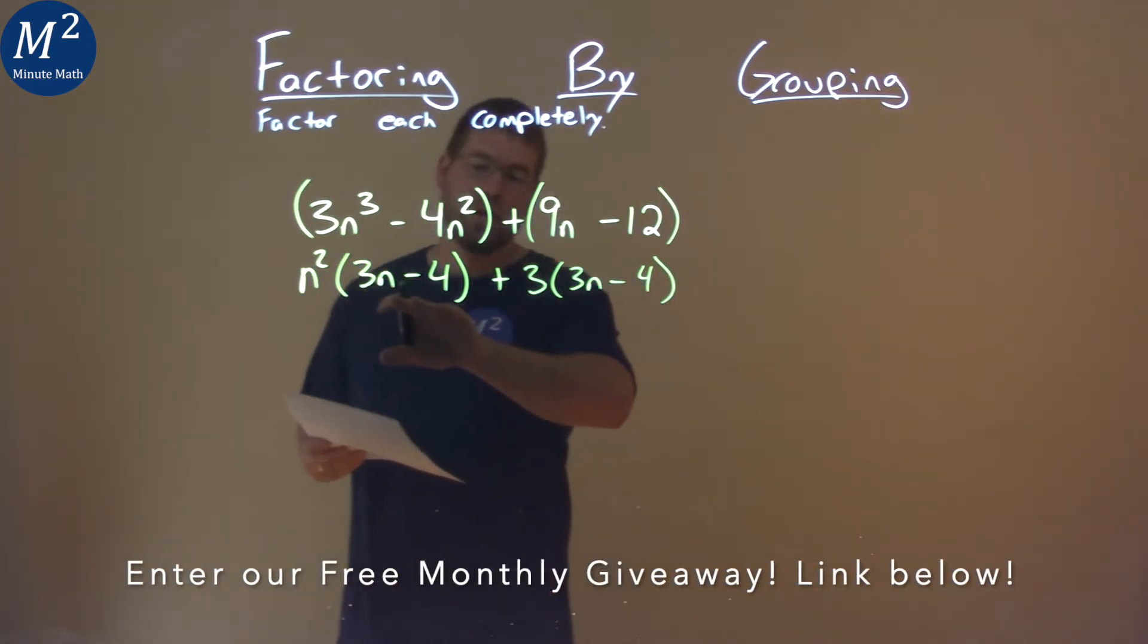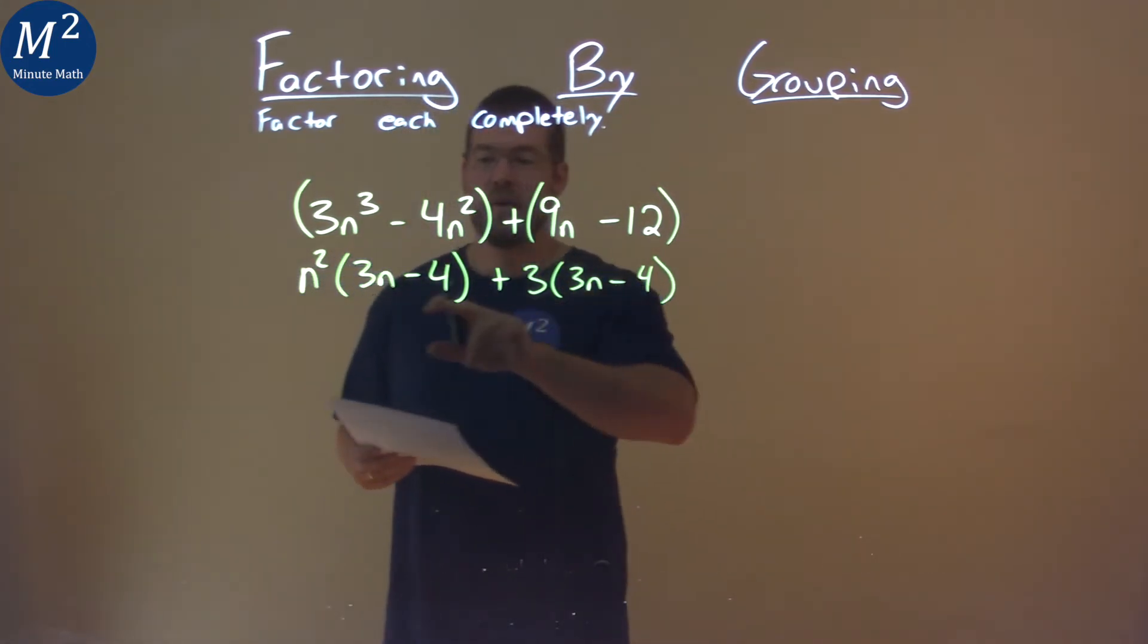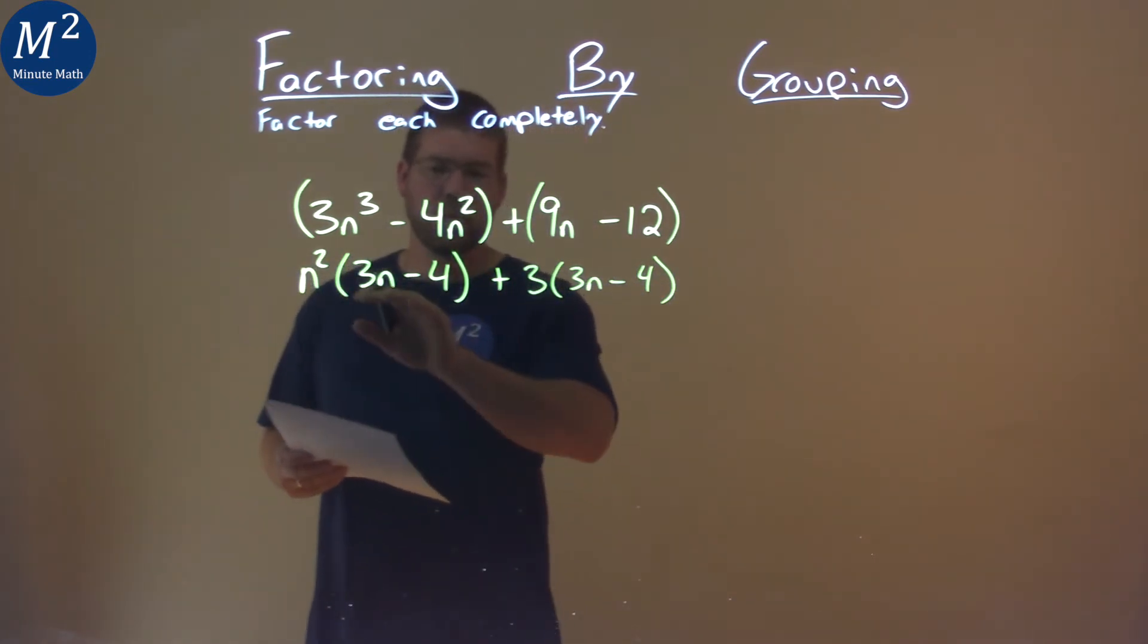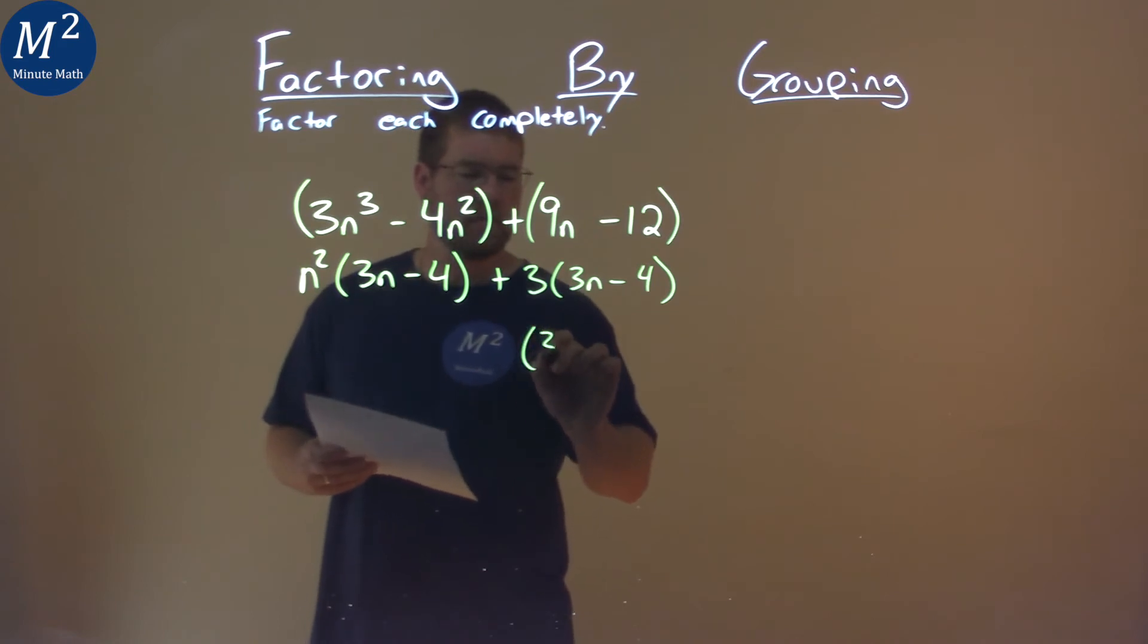What do we notice? 3n minus 4 is now in both parts right here, both sides, separated by an addition. So I'm going to pull a 3n minus 4 out from both parts.